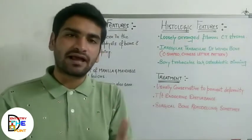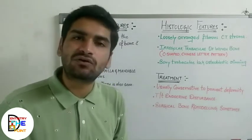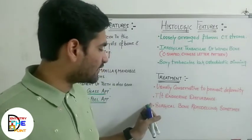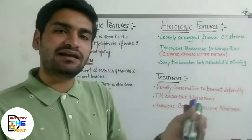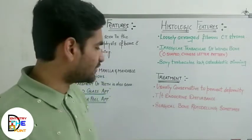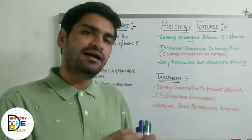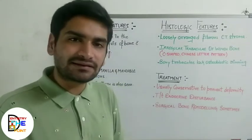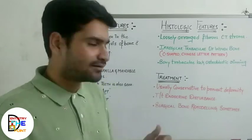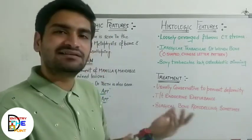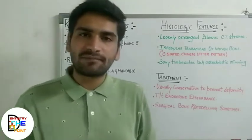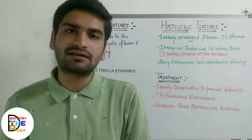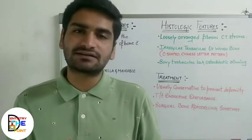Regarding treatment, there is usually no specific treatment; only conservative treatment is done to prevent deformity or further fractures. Any endocrine disorders or other deformities the patient faces are to be treated. Surgical bone recontouring is done in severe cases if necessary. Bone grafts cannot be placed as the condition will recur. Various bisphosphonates or vitamin D can be given to reduce pain, reduce bone resorption, or increase bone strength. This concludes the topic of fibrous dysplasia.